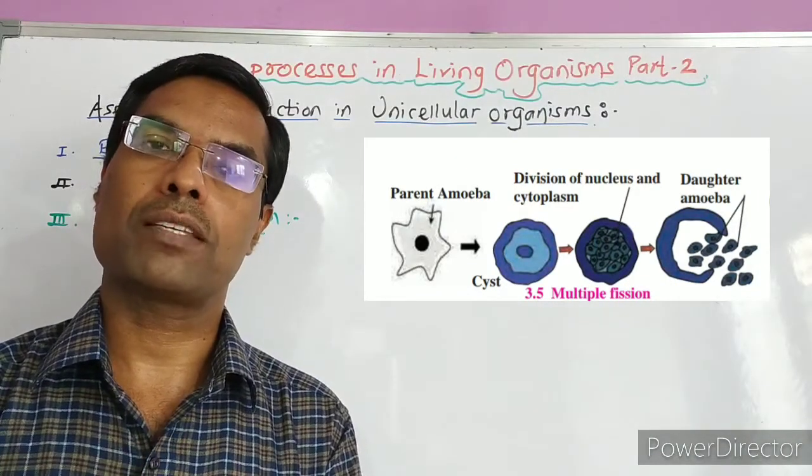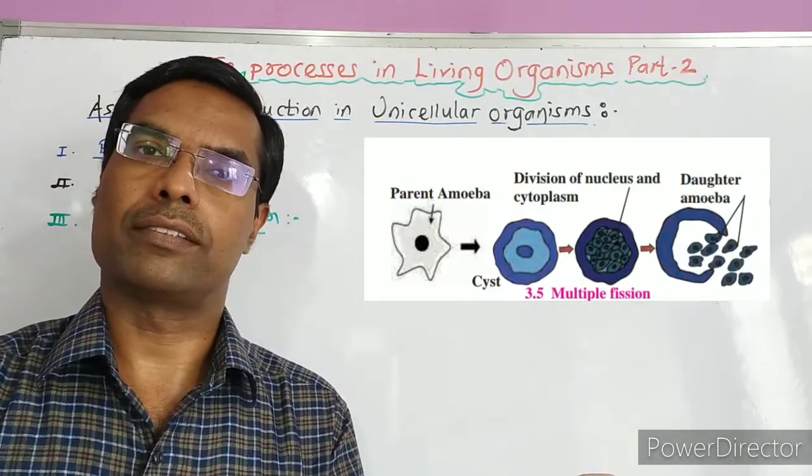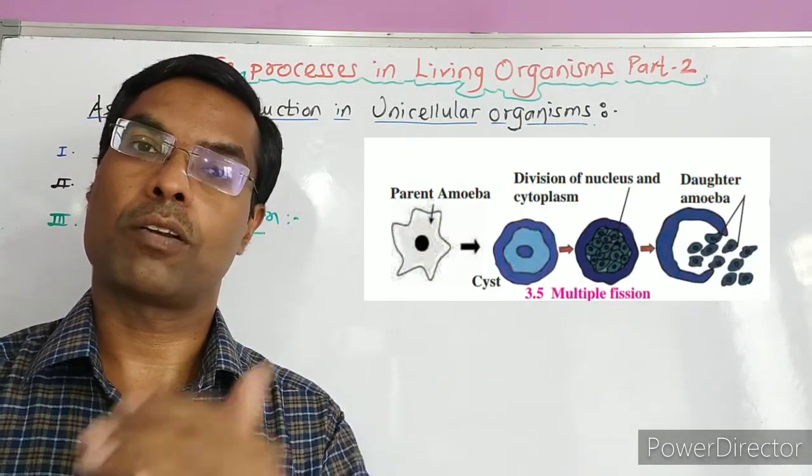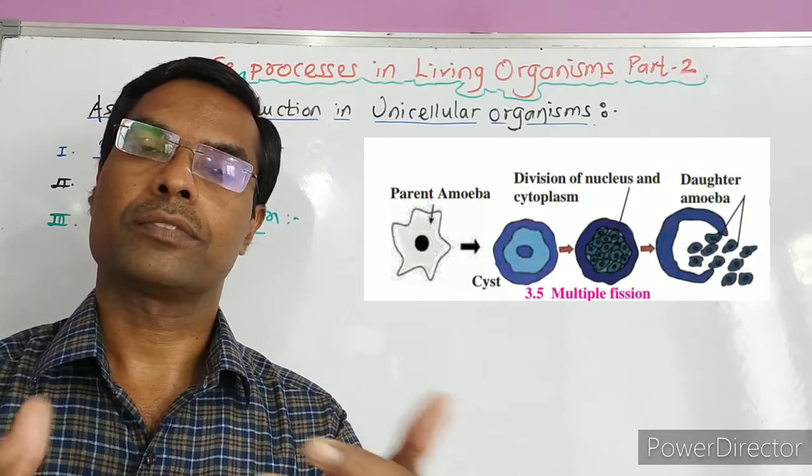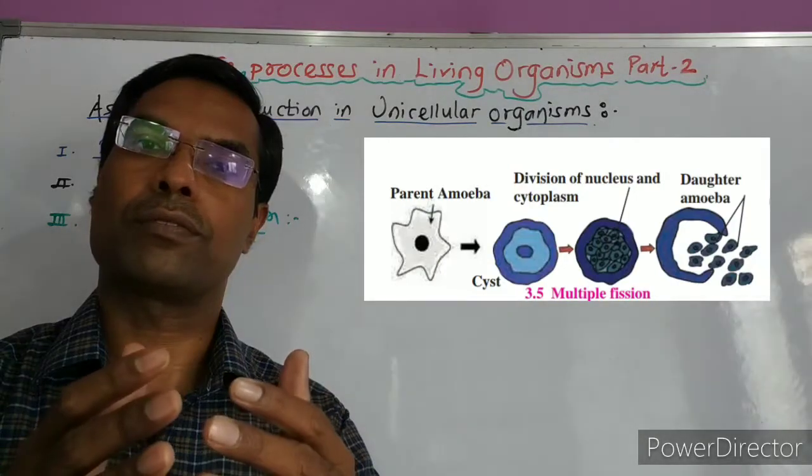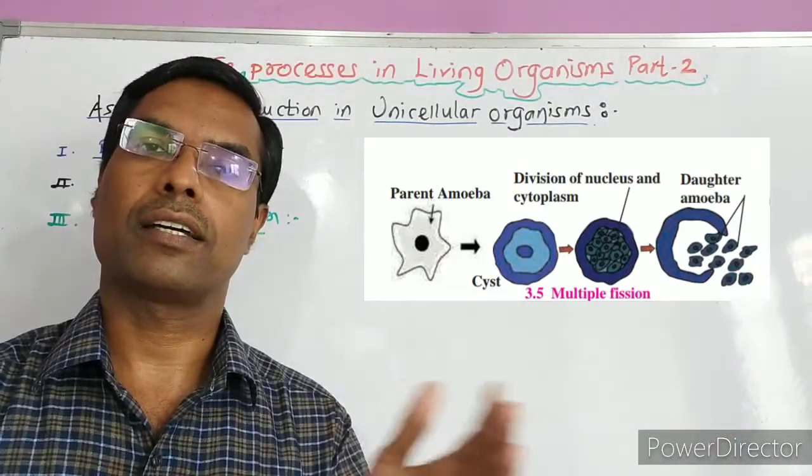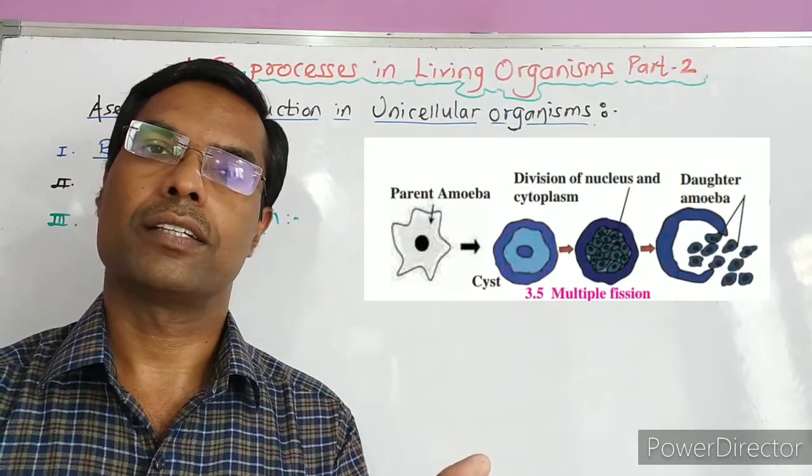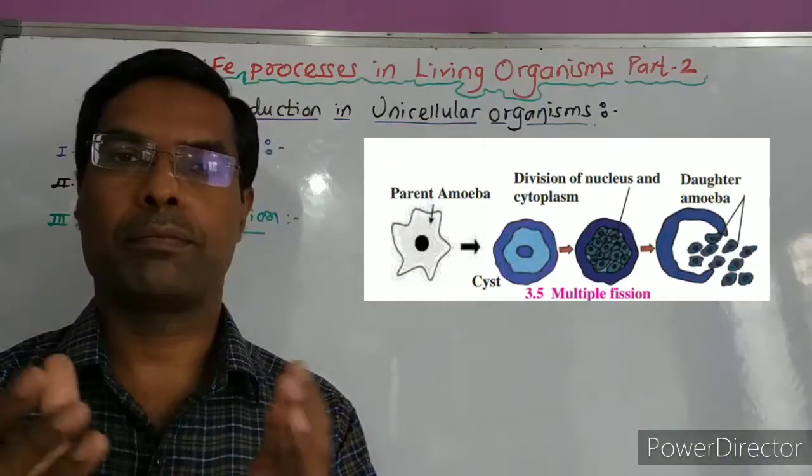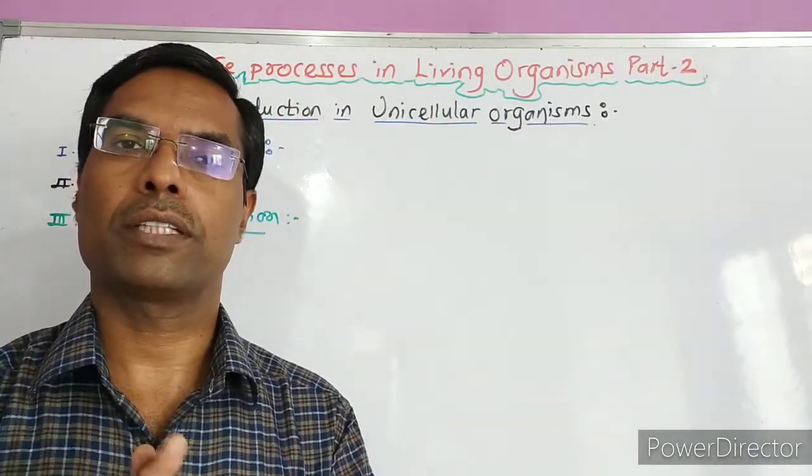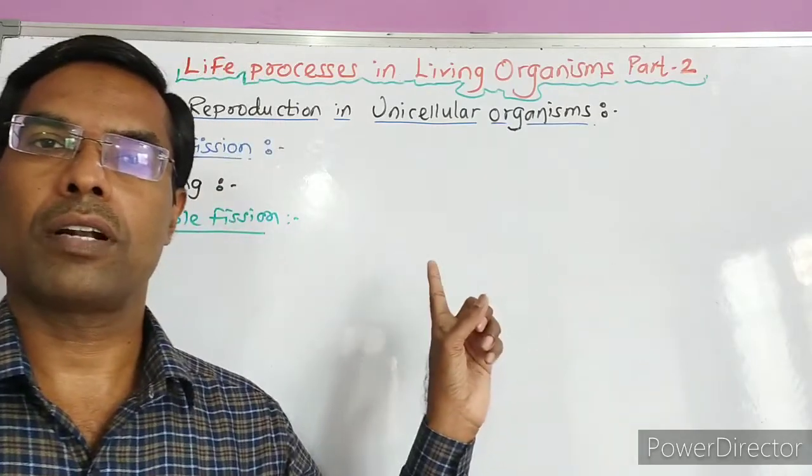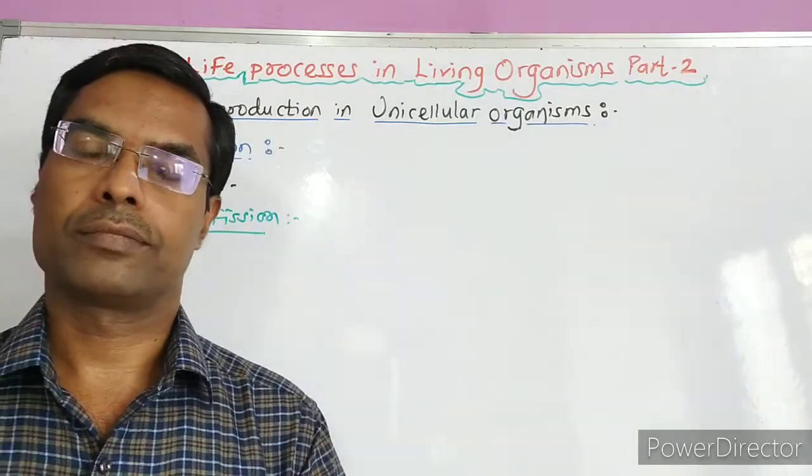Many amoebules are formed. And on obtaining favorable conditions, the cystic phase bursts and the amoebules are released. In this way, the amoeba can perform the asexual method of reproduction which is called multiple fission.